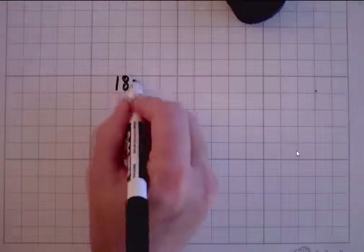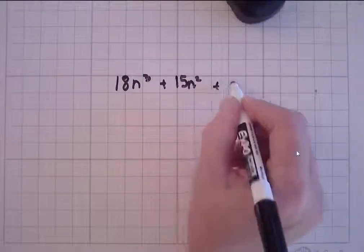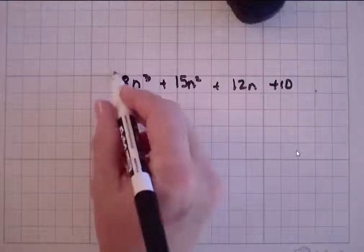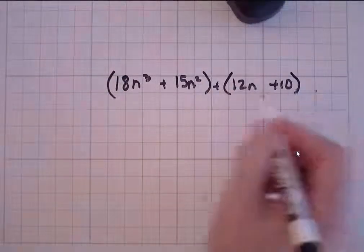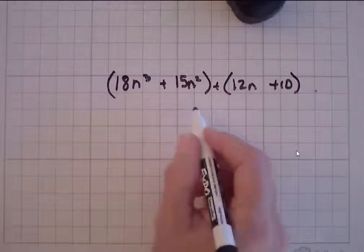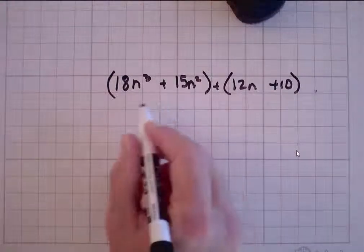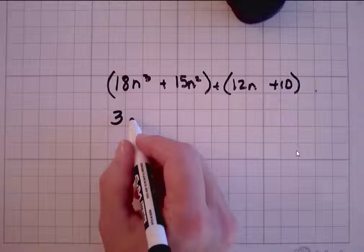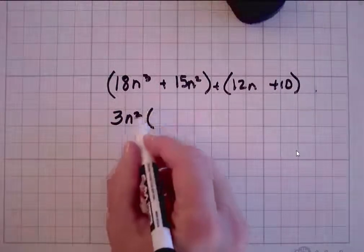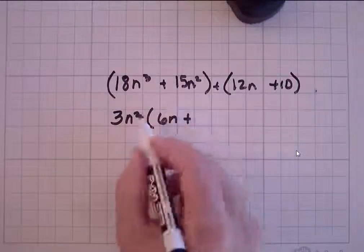Let's try this one: 18n cubed plus 15n squared plus 12n plus 10. The fact that there are four terms should immediately get you thinking about grouping. Put those two together and those two together. When we group, we want to find things inside one of those parentheses that's the same for both — that's what we want to look for. 18 and 15 each have 3 as a factor in common, and n squared and n cubed each have n squared as a factor in common. So 18 divided by 3 is 6, and n cubed divided by n squared is n.